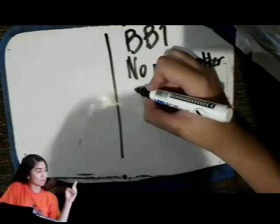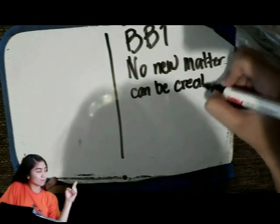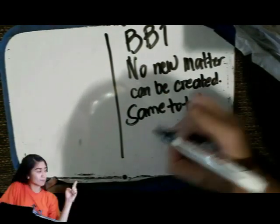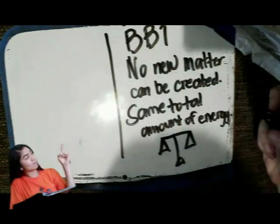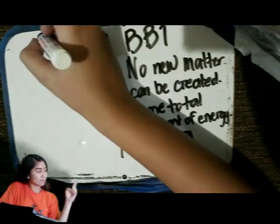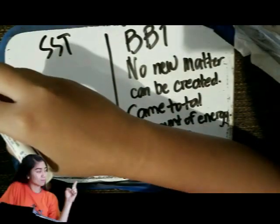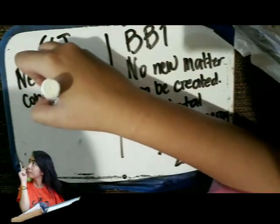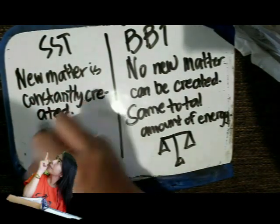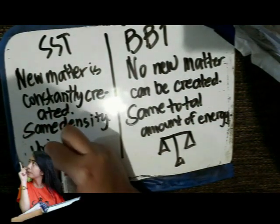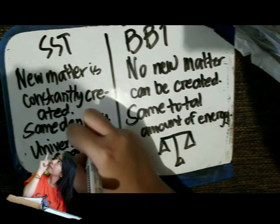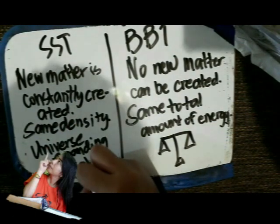The Big Bang theory states that no new matter can be created. The total amount of matter and energy in the universe always stays the same — it never increases or decreases. As the universe expands, it becomes less dense. However, the steady state theory states that although the universe is expanding, matter is constantly being created at the same rate, and therefore the density of the universe never changes. The look of the universe does not change because of this constant creation of matter.